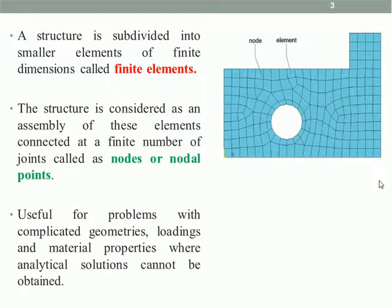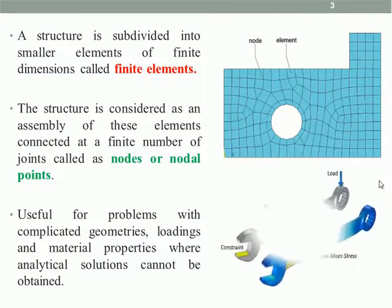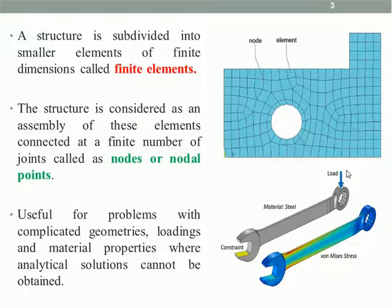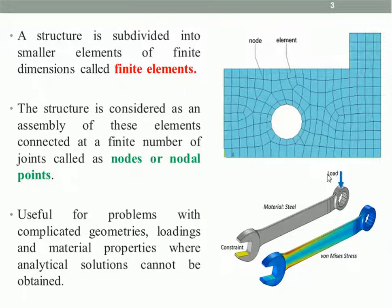In the case of complicated geometries, we have to use the loading conditions in Finite Element Analysis. Here is an example of the spanner. The spanner is located on the left side of the bolt head. The movement is constrained and restricted. The load is applied on the right side. In the case of the spanner, we have to use the stress distribution.